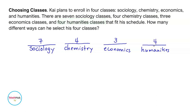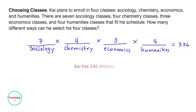Applying the basic counting principle, multiply everything here: seven times four times three times four. This is equal to 336. Kai has 336 choices.